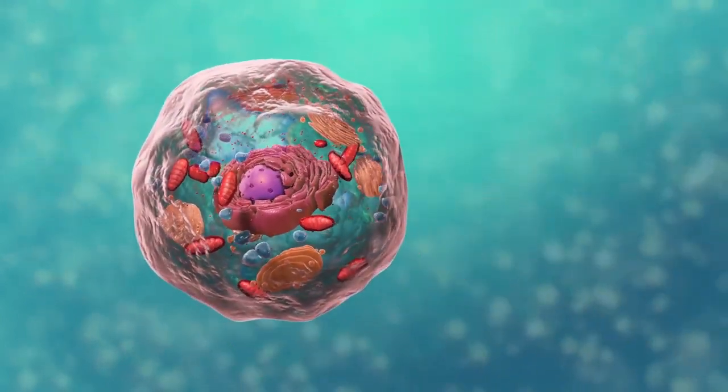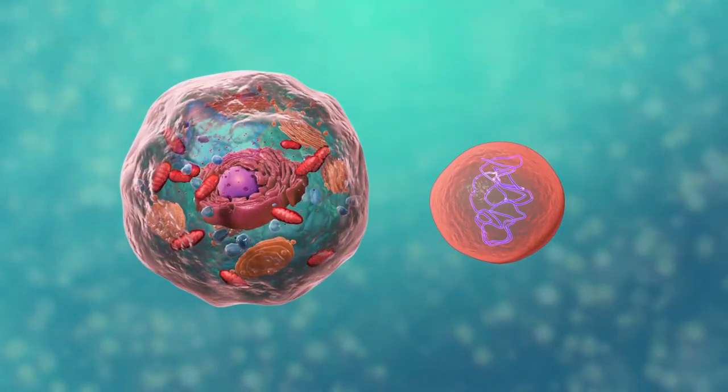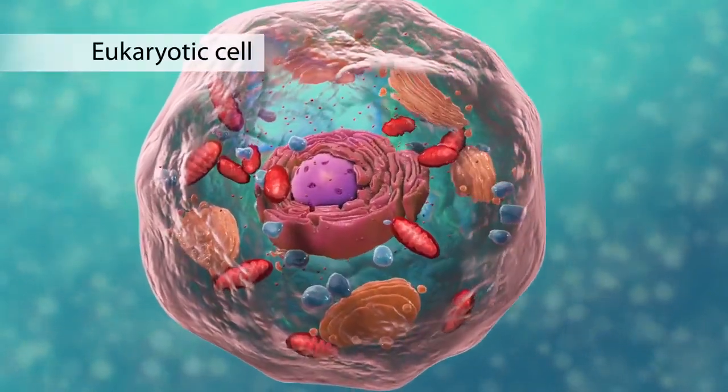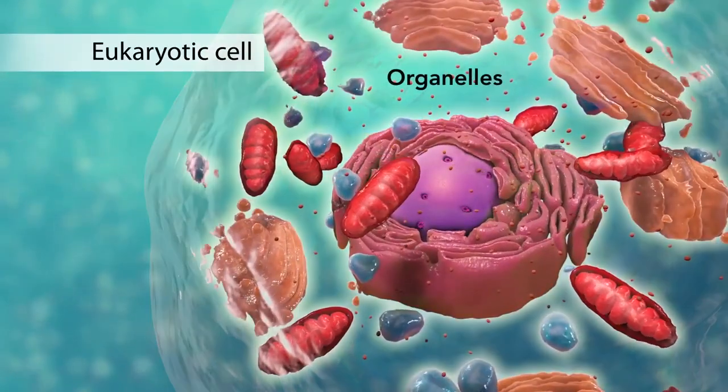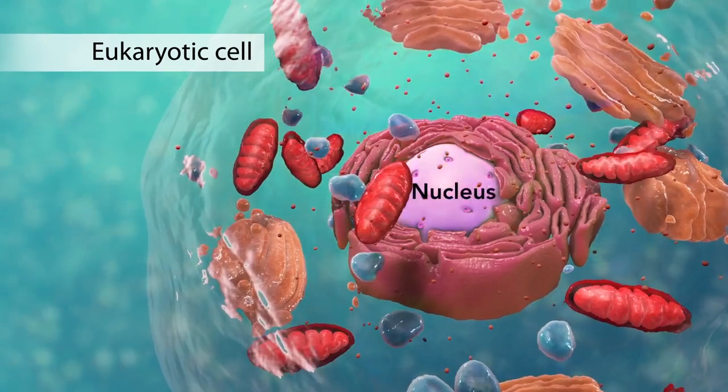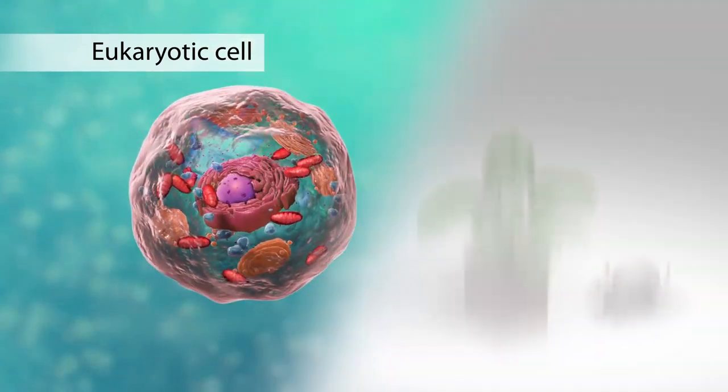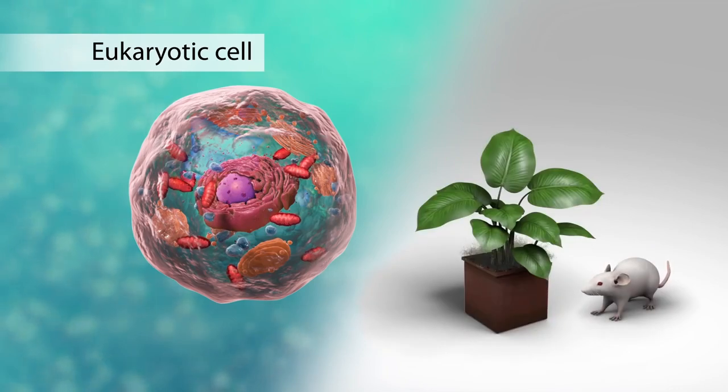There are two broad categories of cells. The first category is eukaryotic cells. They have organelles which include the nucleus and other special parts. Eukaryotic cells are more advanced complex cells such as those found in plants and animals.